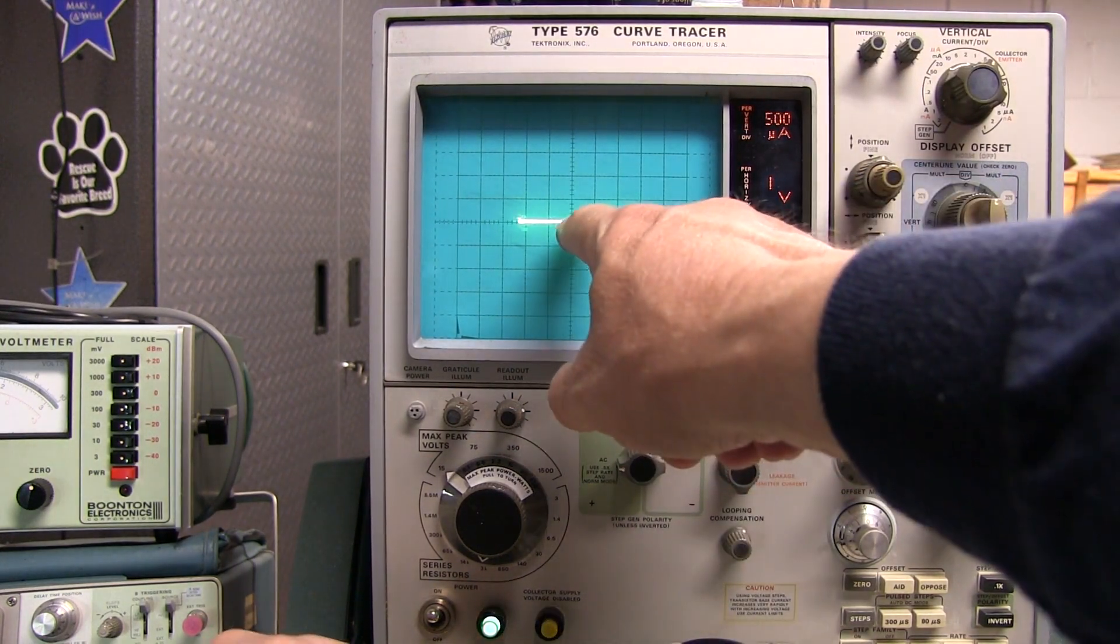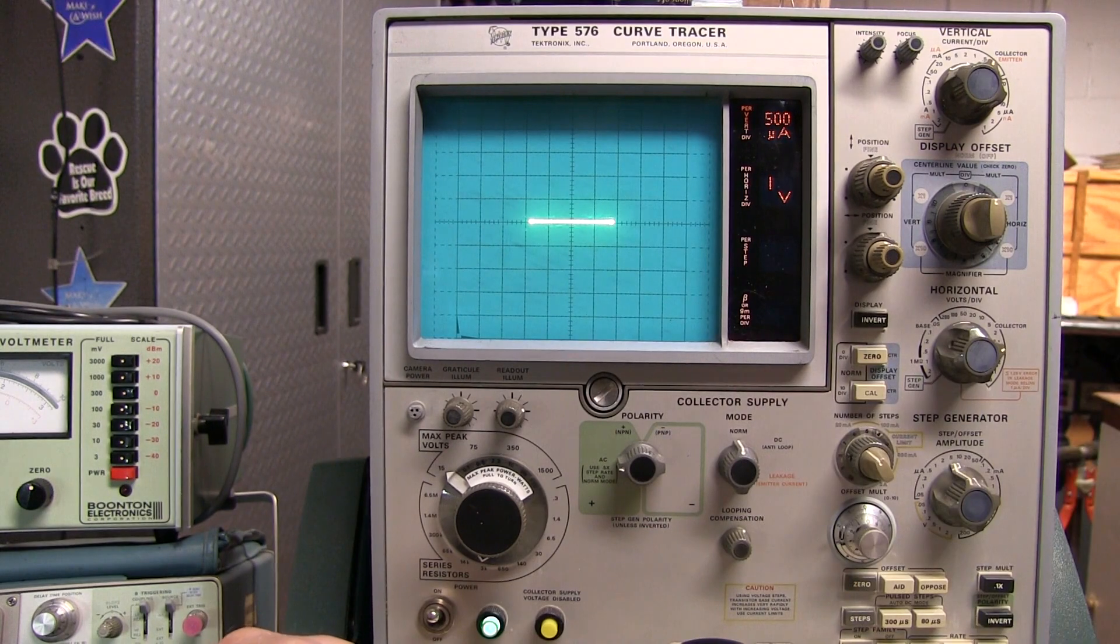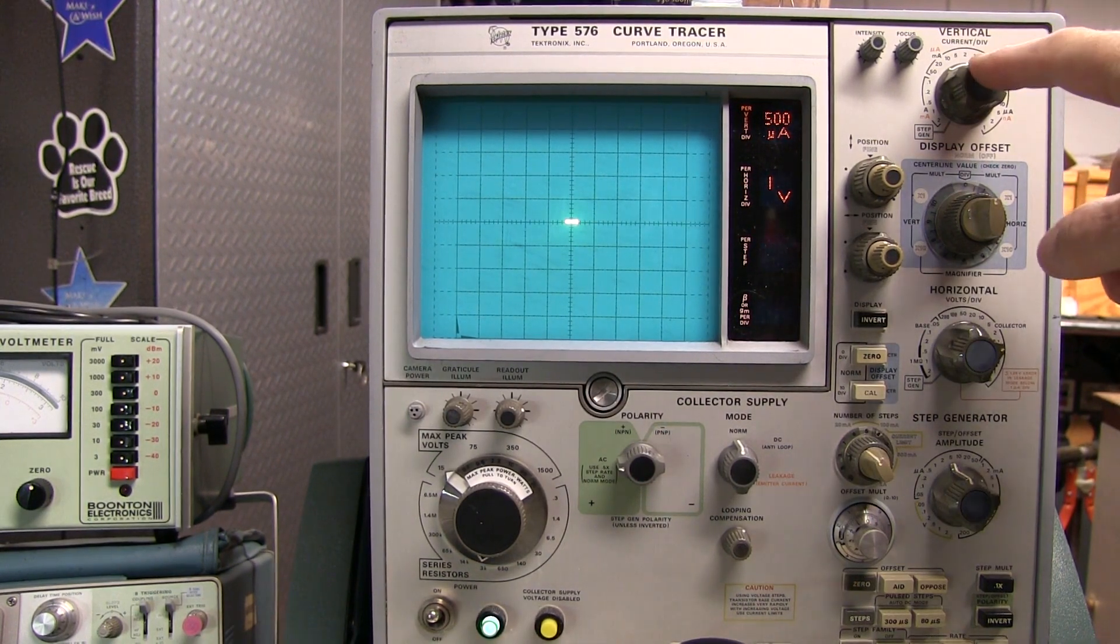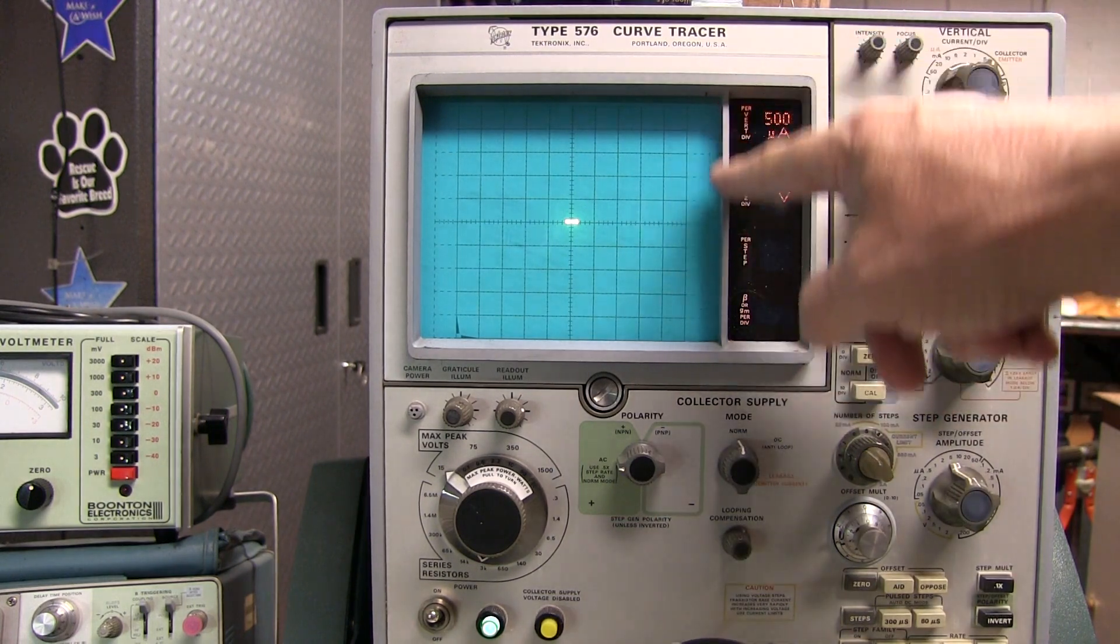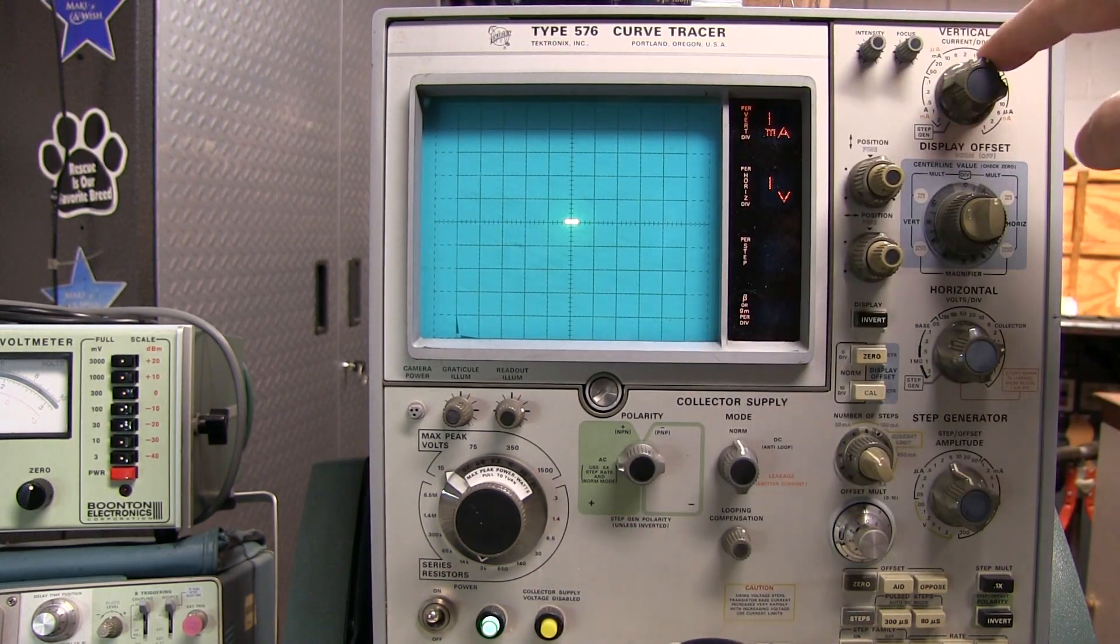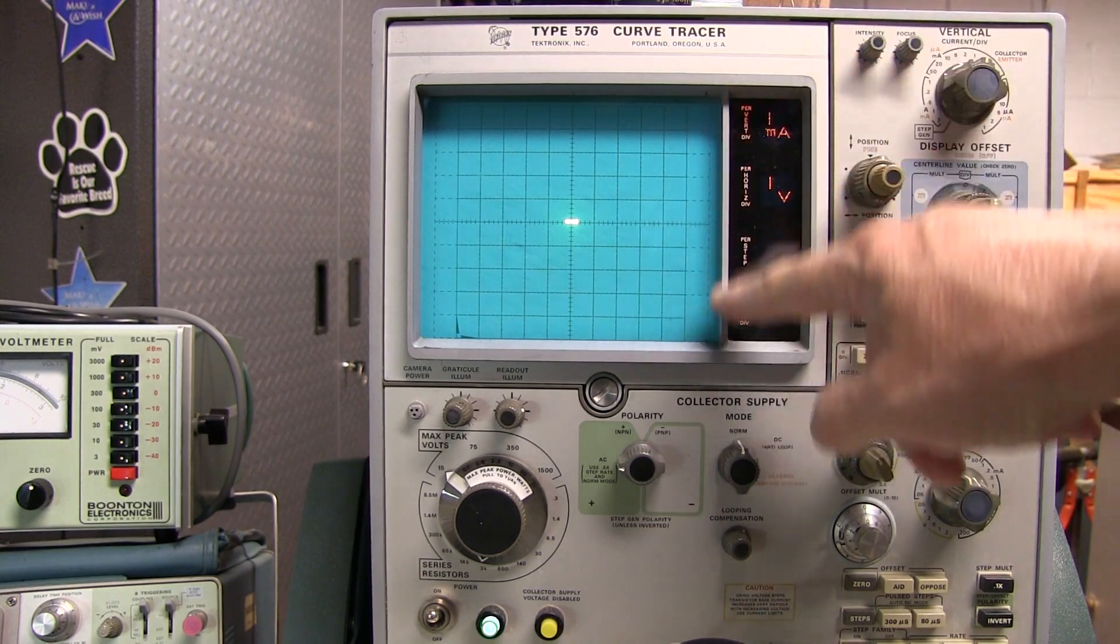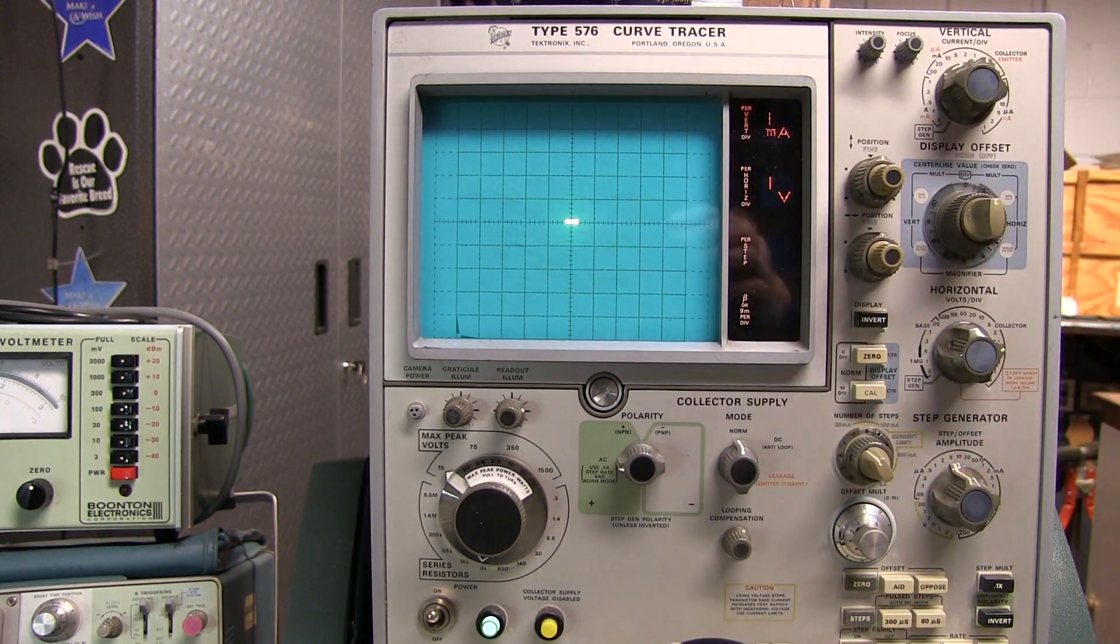So we can see right now we're at 1 volt per division. So that's plus or minus a volt, plus or minus 2, plus or minus 3, etc. The vertical control will determine how much current per division we have going vertically. So right here it's set to 1 milliamp per division going up and down. That's probably a decent place to start.